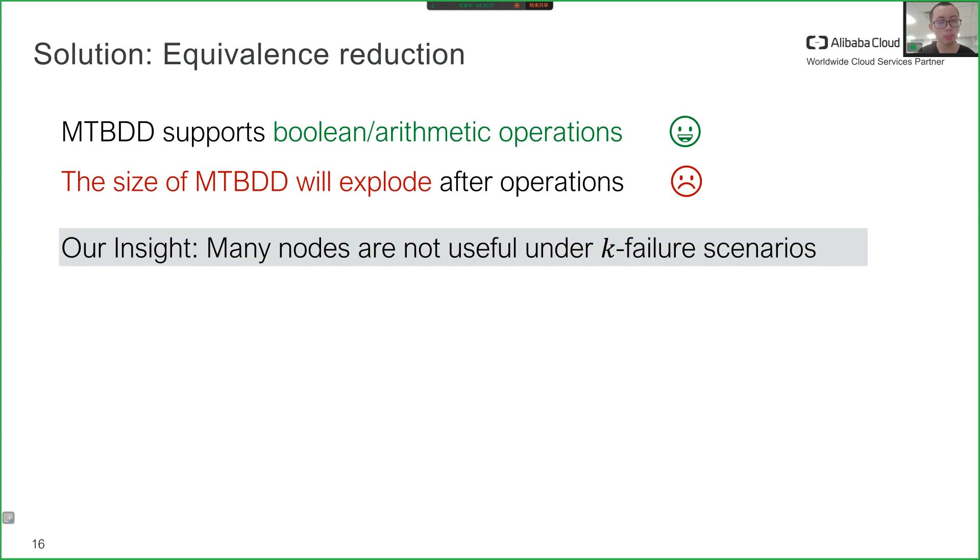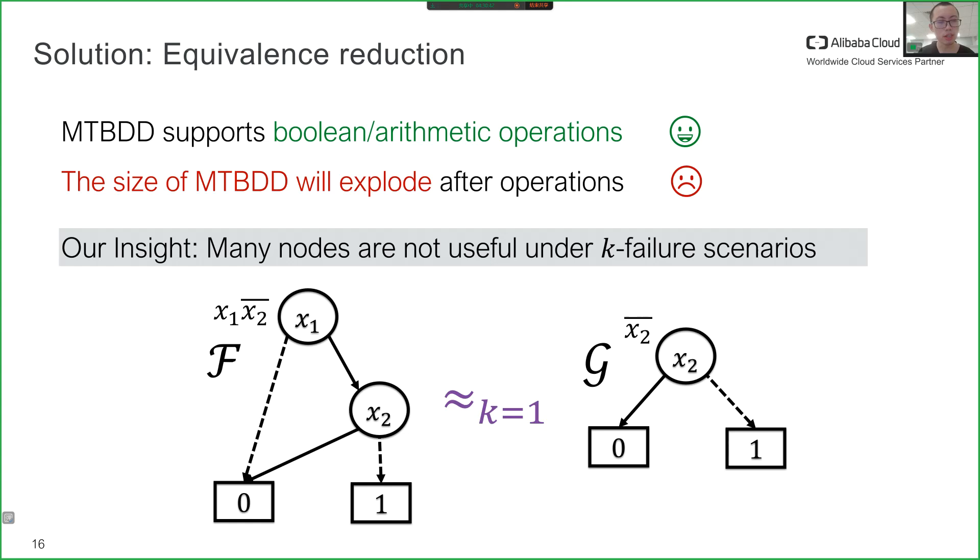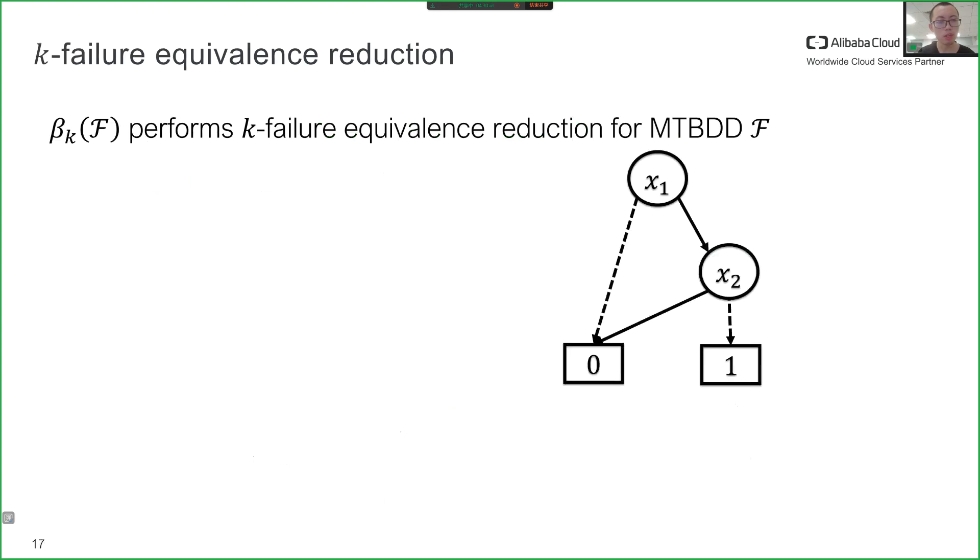Our insight is that many nodes are not useful under k failure scenarios. For example, under one failure scenario, if we know X2 is false, all other variables must be true. So X1 is equivalent to not X2. Performing one failure equivalence reduction on the left MTBDD should remove the X1 node, resulting in a simpler MTBDD on the right.